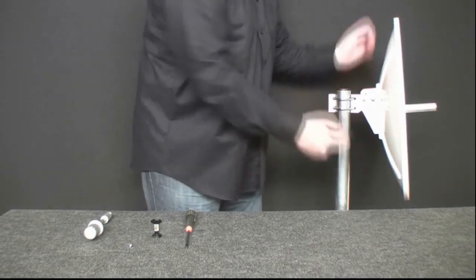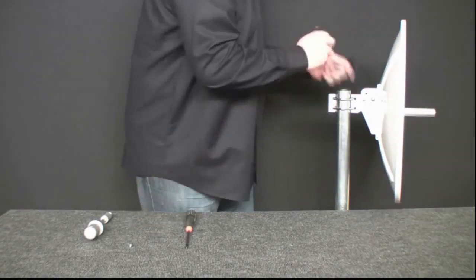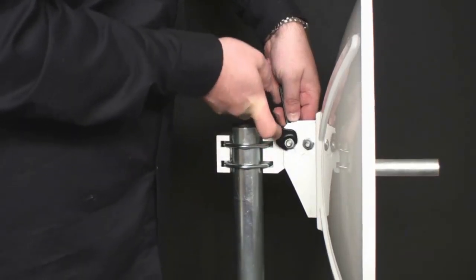Before tightening the main screws, set the required elevation of antenna. Tighten both main screws of holder by using two keys number 13.